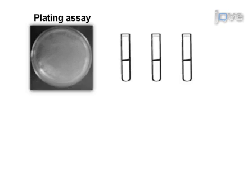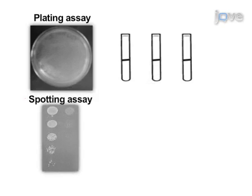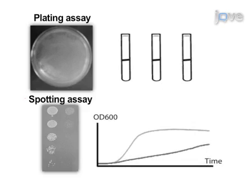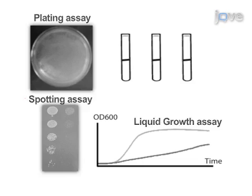In the first growth assay demonstrated here, polyglutamine toxicity is monitored through a plating assay. As a second, complementary growth assay, a spotting assay is utilized to detect even subtle differences in cell growth. The most quantitative approach is shown in the third assay, where yeast cells are grown in liquid cultures and toxicity is monitored through observation of optical density at 600 nanometers.